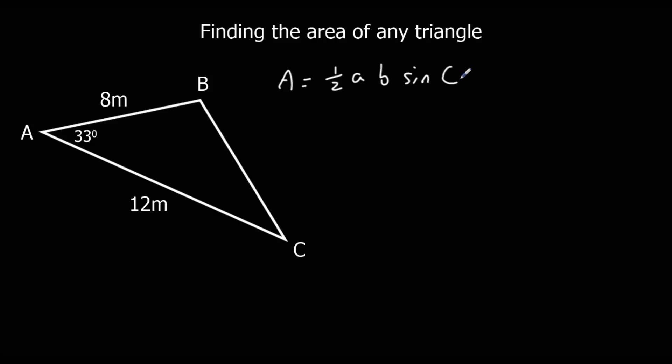So our C here is going to be the angle. That's C. That would be little c. These two are a and b. Then we just substitute the numbers in. So it's half times 8 times 12 sin 33.